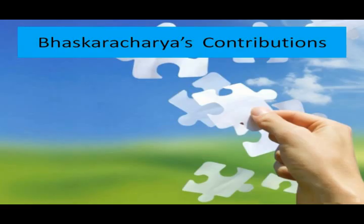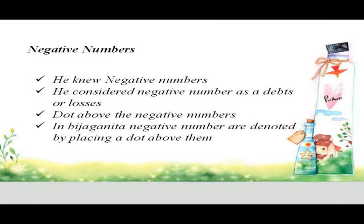Contributions of Bhaskaracharya in mathematics — negative numbers. Bhaskaracharya was known for his treatment of negative numbers, which he considered as debits or losses, and for his detailed arithmetic operations. He handled arithmetic involving negative numbers efficiently. In Vijayakarnitha, negative numbers are denoted by placing a dot above them.